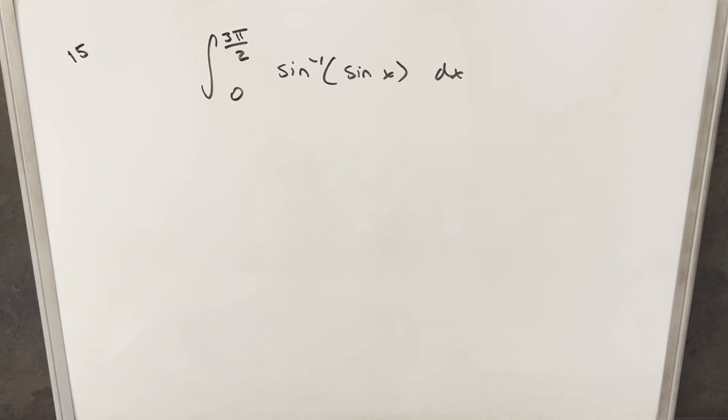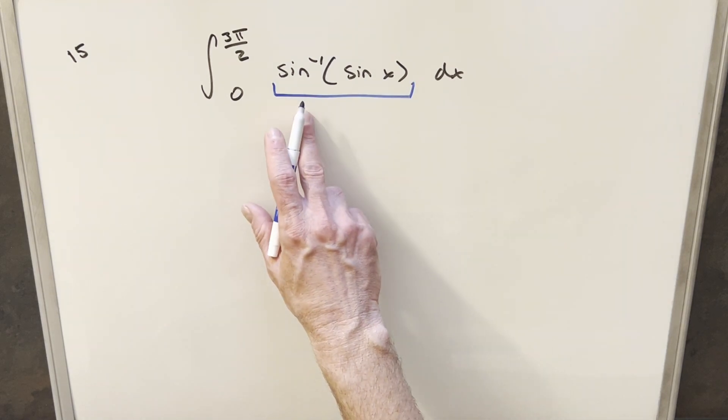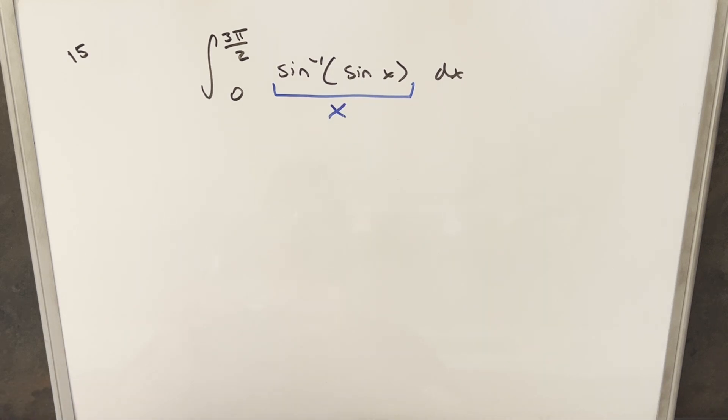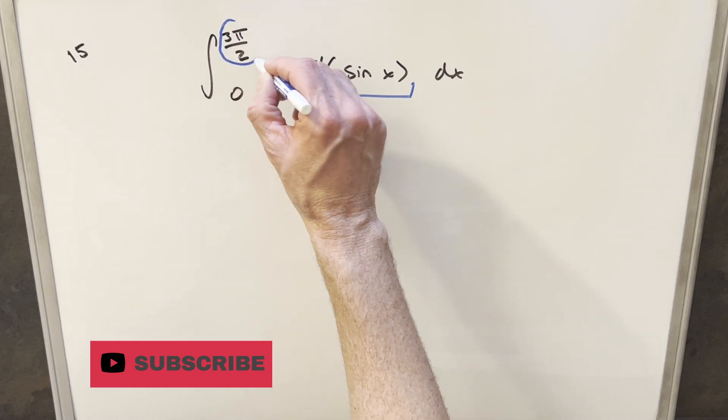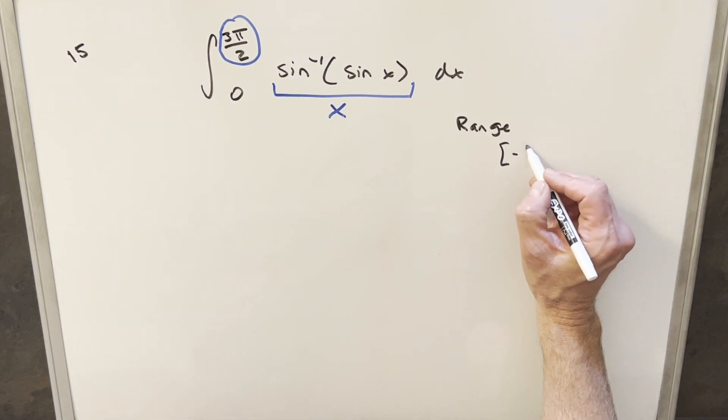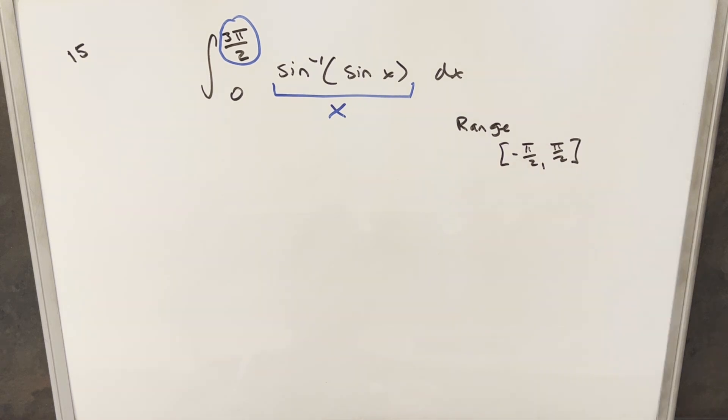Now the interesting thing here is this could be so easy because when you look at this with the function inside the inverse, it's tempting to just say this is x, and that's true within some values, but the only problem is the bounds. Our bounds go all the way up to 3π/2. And the tricky thing about that is if we look at the range for arcsin, it just goes from minus π/2 to π/2. And so the trouble with 3π/2 is it's outside of this range.